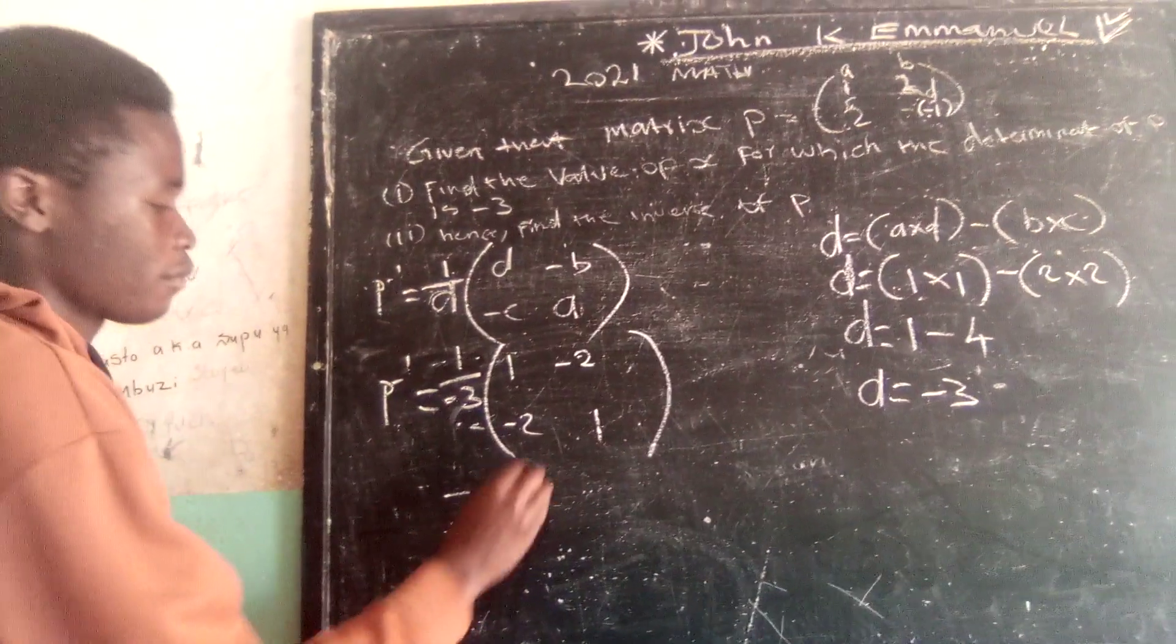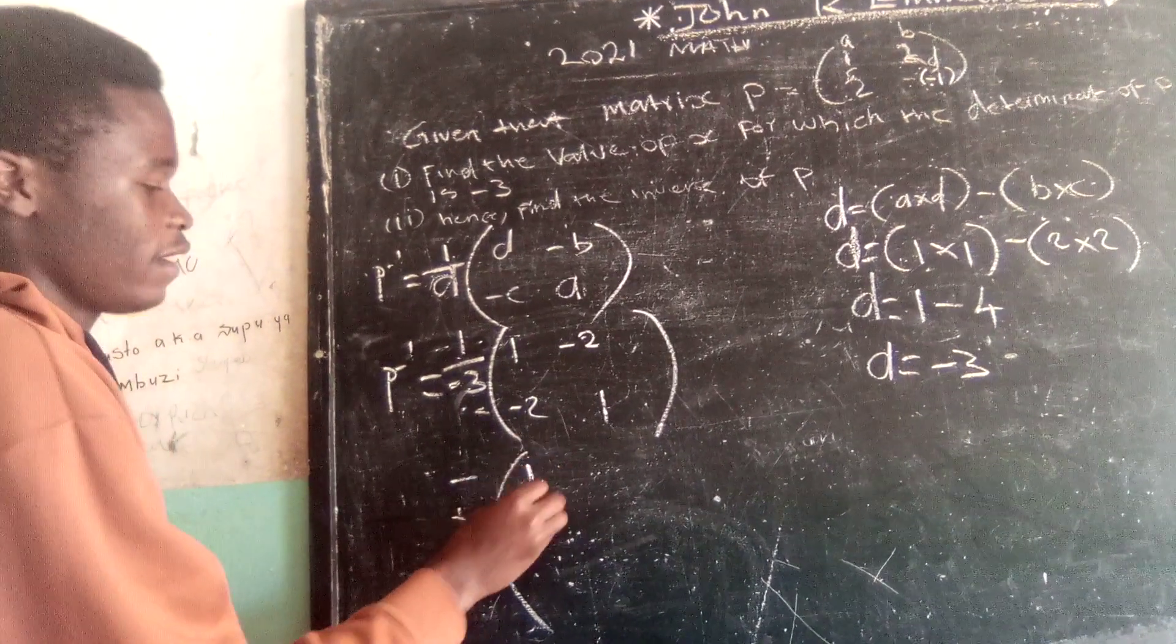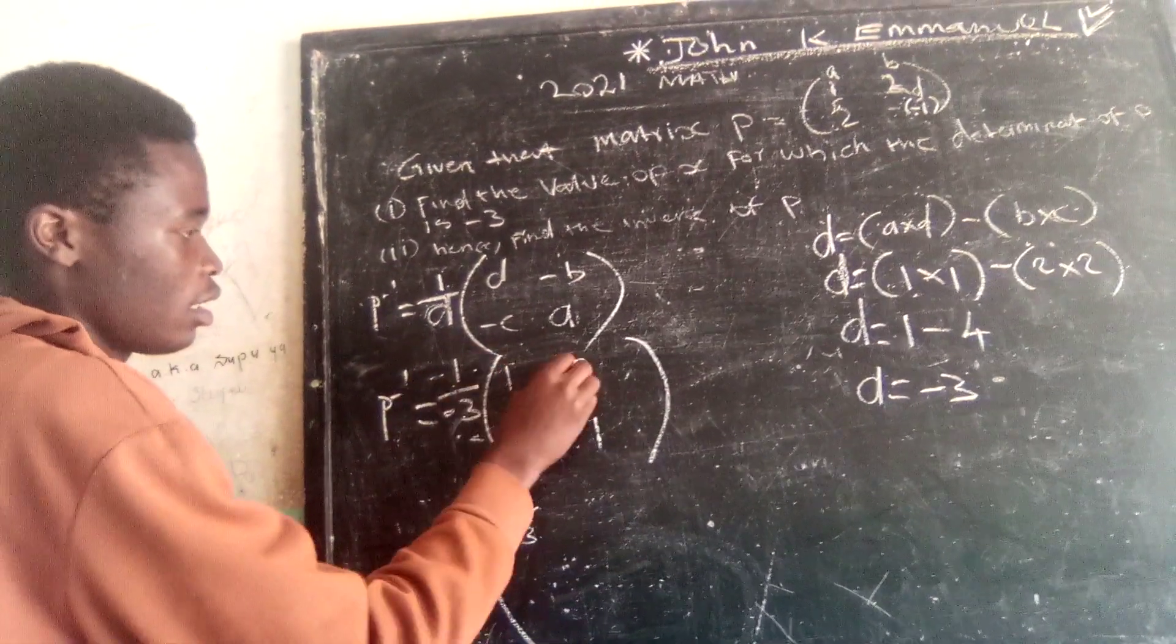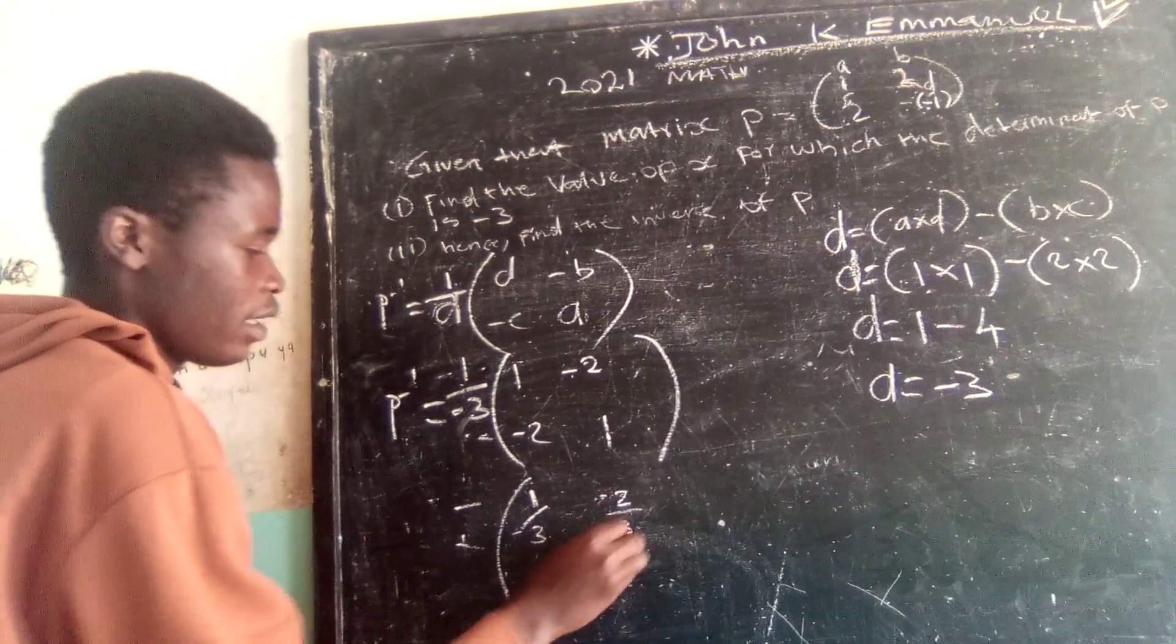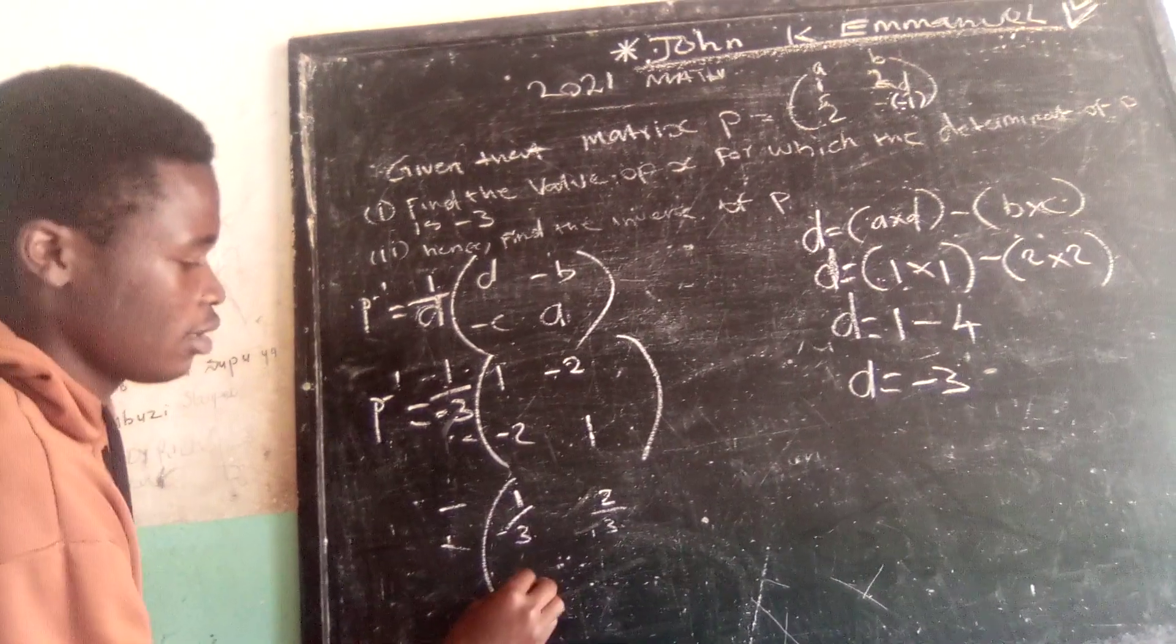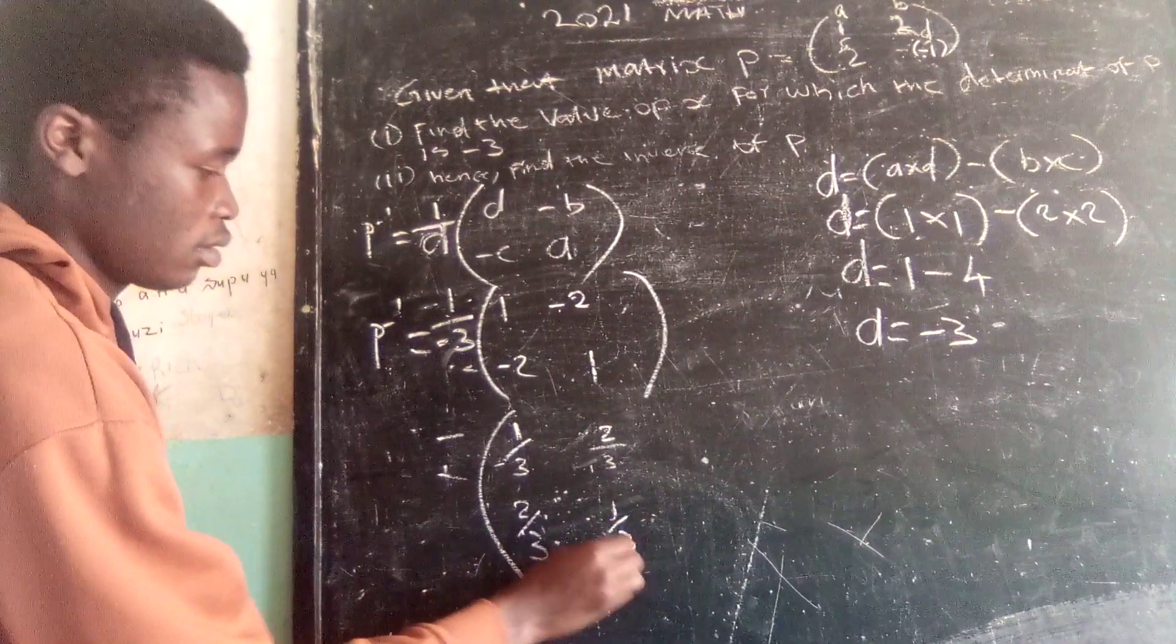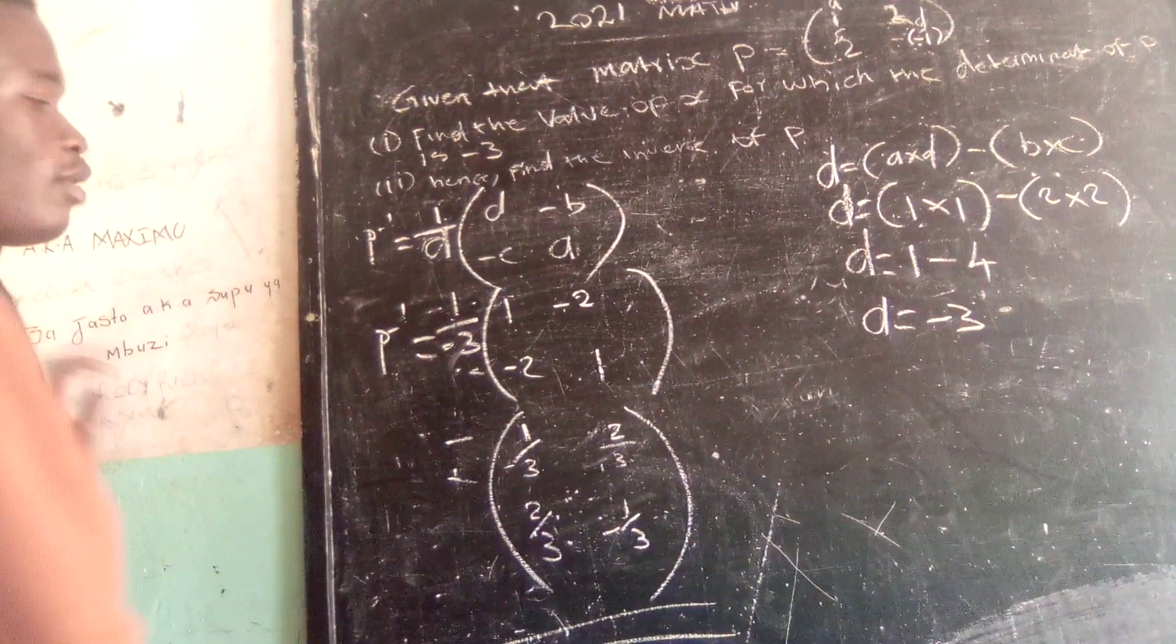Therefore, this one is 1 divided by negative 3. Then here we're going to have negative 2 divided by negative 3, and there. So this is our answer.